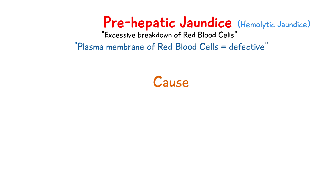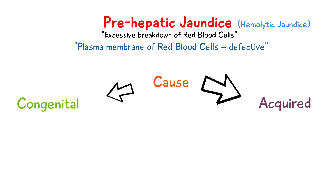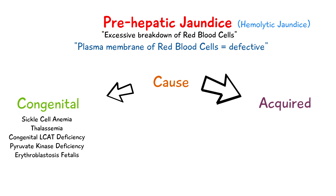The cause of this type of jaundice can be congenital or acquired. Some examples of congenital hemolytic jaundice are sickle cell anemia, thalassemia, congenital LCAT deficiency, pyruvate kinase deficiency, and erythroblastosis fetalis.